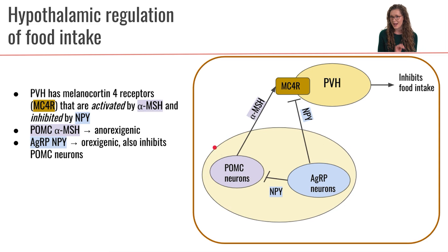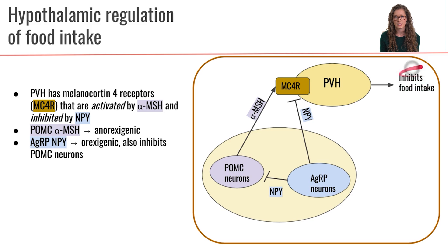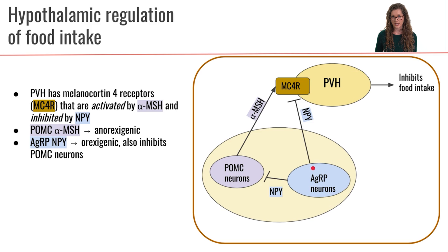The other sub-nuclei within the arcuate nucleus are the AGRP neurons. The AGRP neurons use a different neurotransmitter called NPY. When the AGRP neurons secrete NPY, that NPY also binds to the MC4R receptor on the paraventricular hypothalamus — except in this case, NPY inhibits this MC4R receptor. When NPY inhibits the MC4R receptor, that suppresses the neurons in the PVH, so we no longer get inhibition of food intake. In fact, food intake increases, making the AGRP neurons orexigenic.